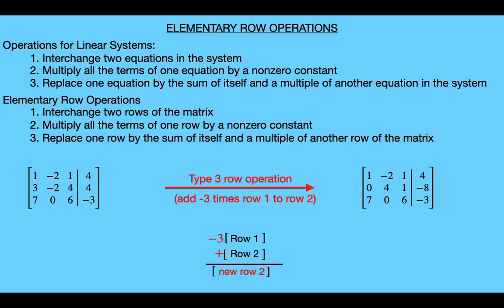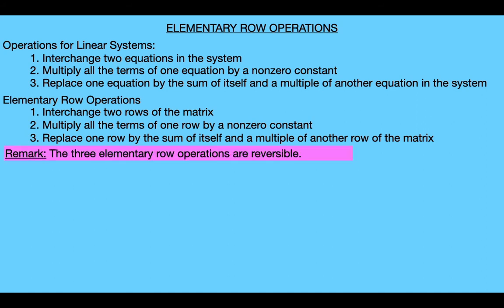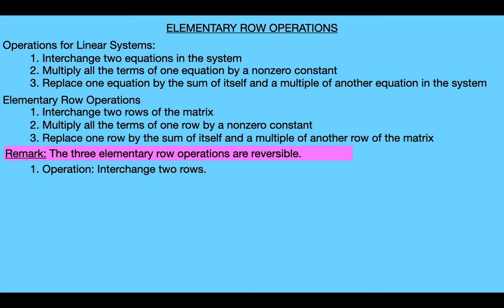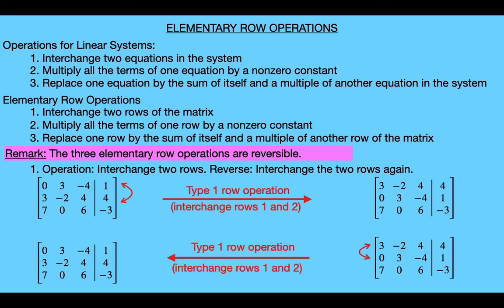Now that you've seen some examples using these three elementary row operations, I have one remark, and that is that these three elementary row operations are reversible. So if you consider the first operation and suppose that we interchange two rows, then we could reverse it by interchanging those two rows again. So if we look at the example shown earlier, where we started with this original matrix and then applied the first row operation by interchanging the first and second rows to give us this matrix, then we could undo that by switching the first and second rows again, and we'd end up with the matrix that we originally started out with. So to reverse an operation of the first type, you would just apply that same operation again.